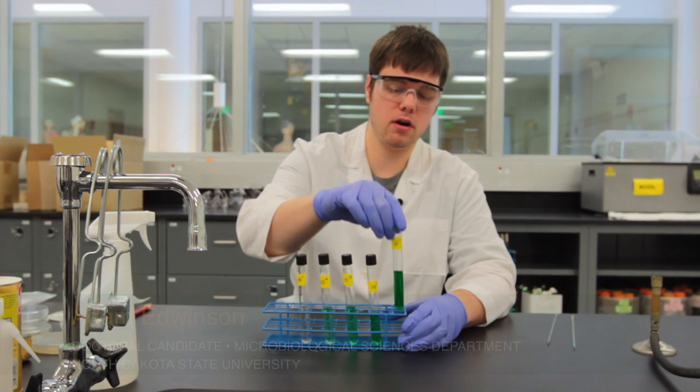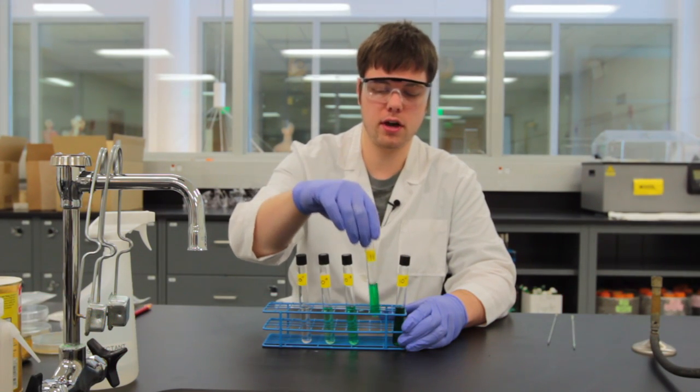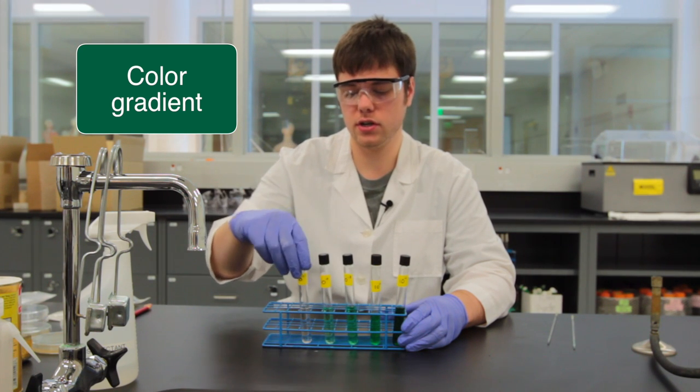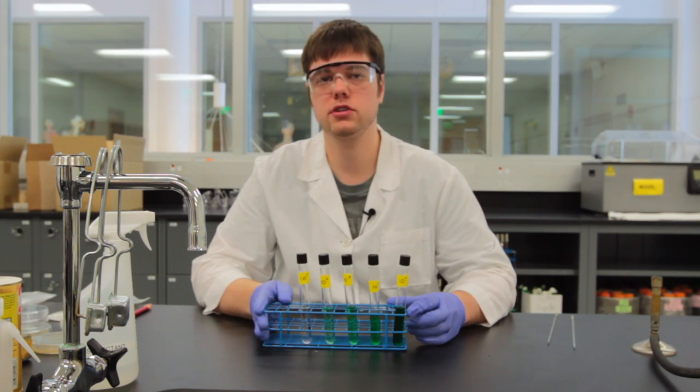So we've made our dilution series, we've got our 10 to the negative 1 all the way down to the 10 to the negative 5. Notice how as we go down our dilution series, the color starts to get weaker and weaker, which is good, meaning that we've made our dilution series correctly.